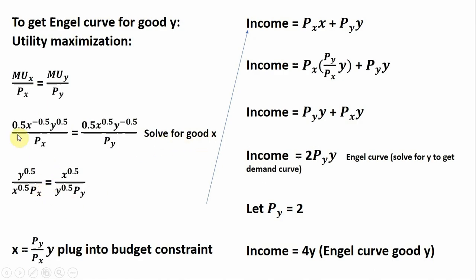The 0.5s cancel again. Following the rules of exponents, bring anything raised to a negative power down into the denominator. Then, doing some cross-multiplying, we get X equals the following. Plugging that into the budget constraint and simplifying, we have the Engel curve for good Y.